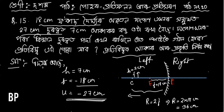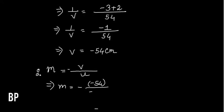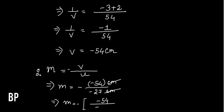And u is minus 27 centimeters. Centimeters cancel. So I get minus 54 divided by minus 27, which is minus 2 divided by 1. The minus and minus cancel, giving m is equal to minus 2.